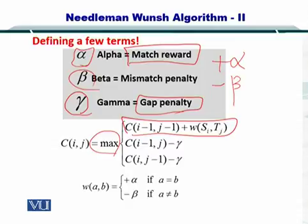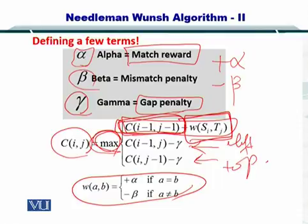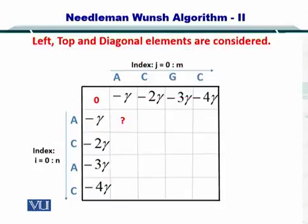In this way, you can compute each one of these. So here is your diagonal, the previous diagonal. Here is your plus alpha or minus beta as shown here. And here are your left and top elements. So you can easily compute the maximum and assign it to the element in the matrix that you were trying to compute here.